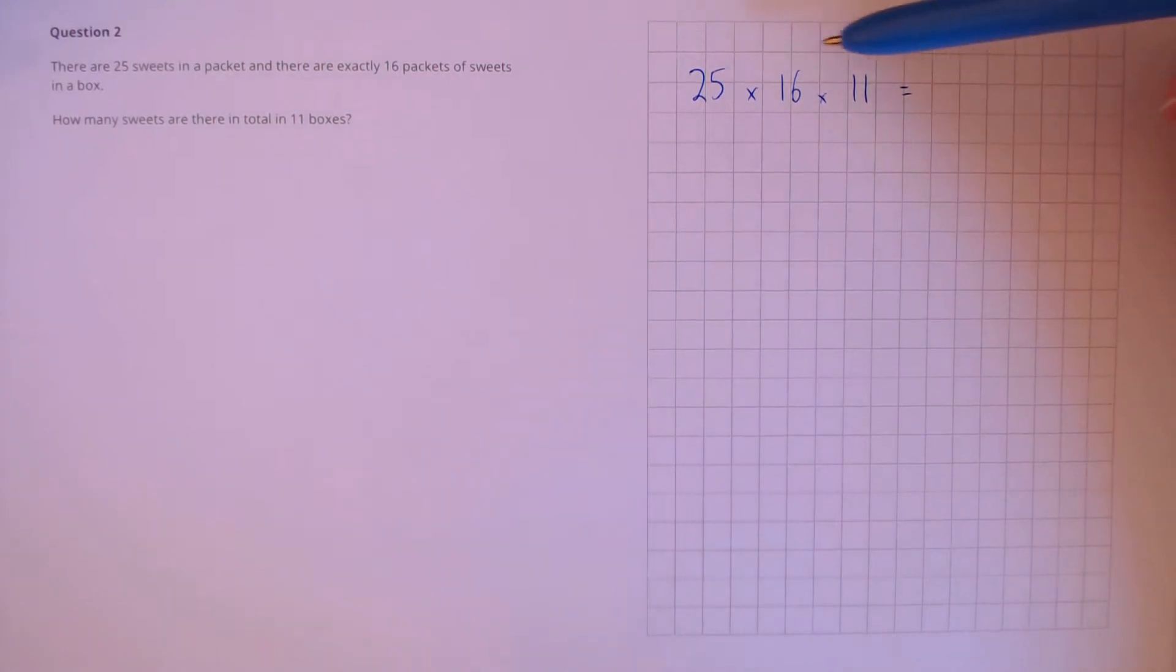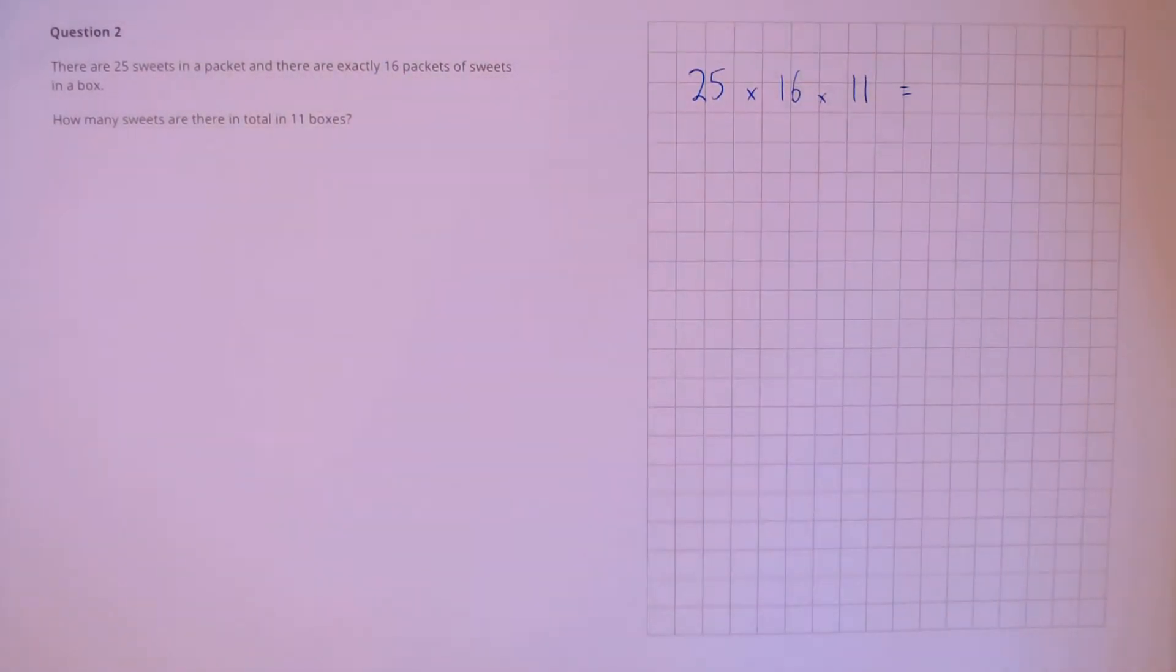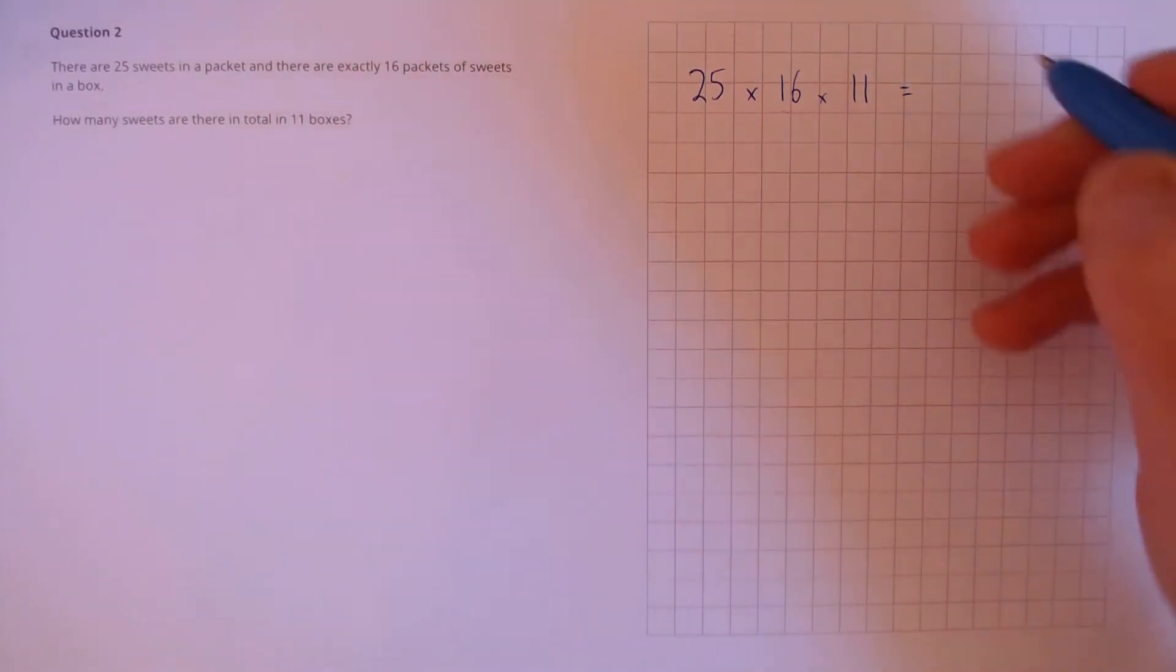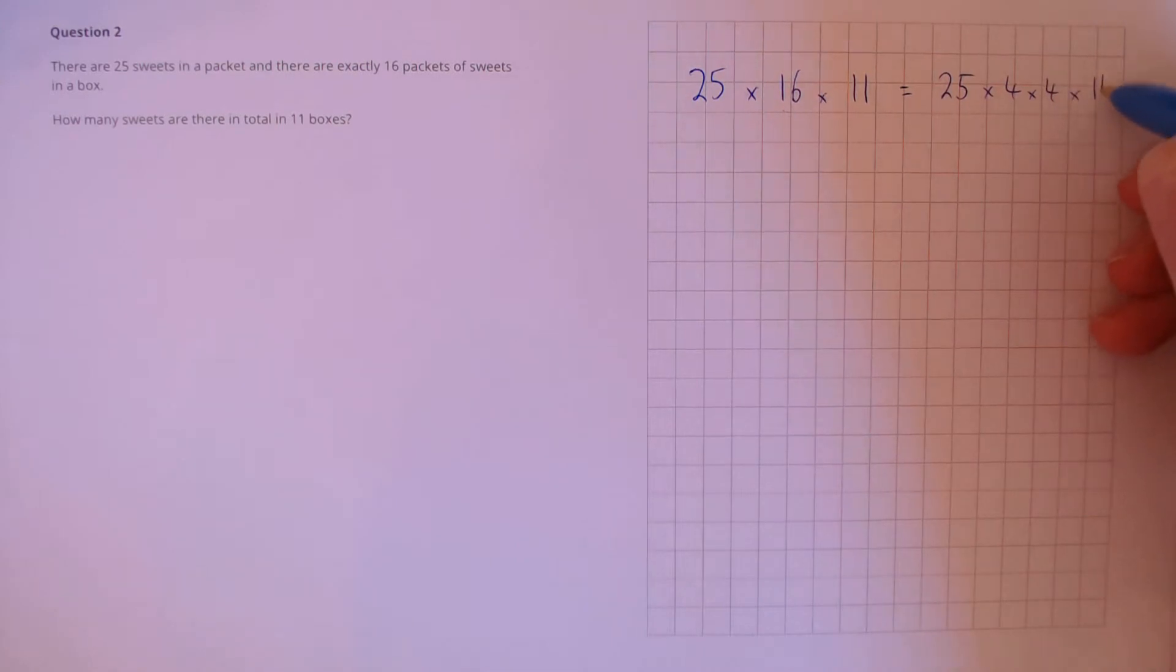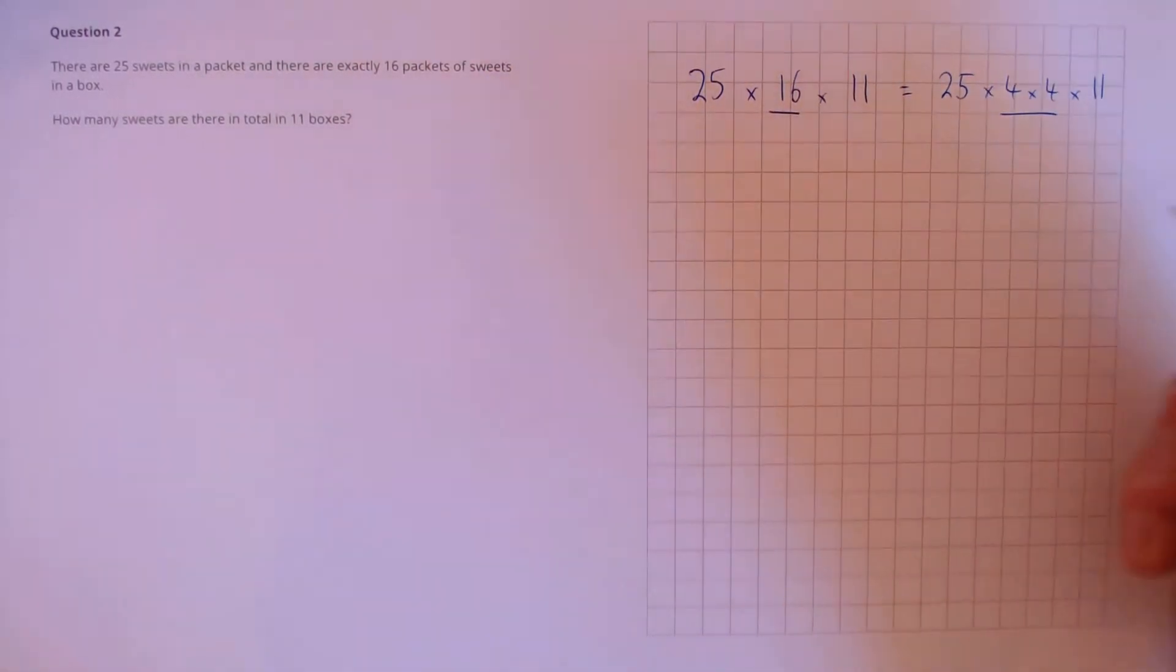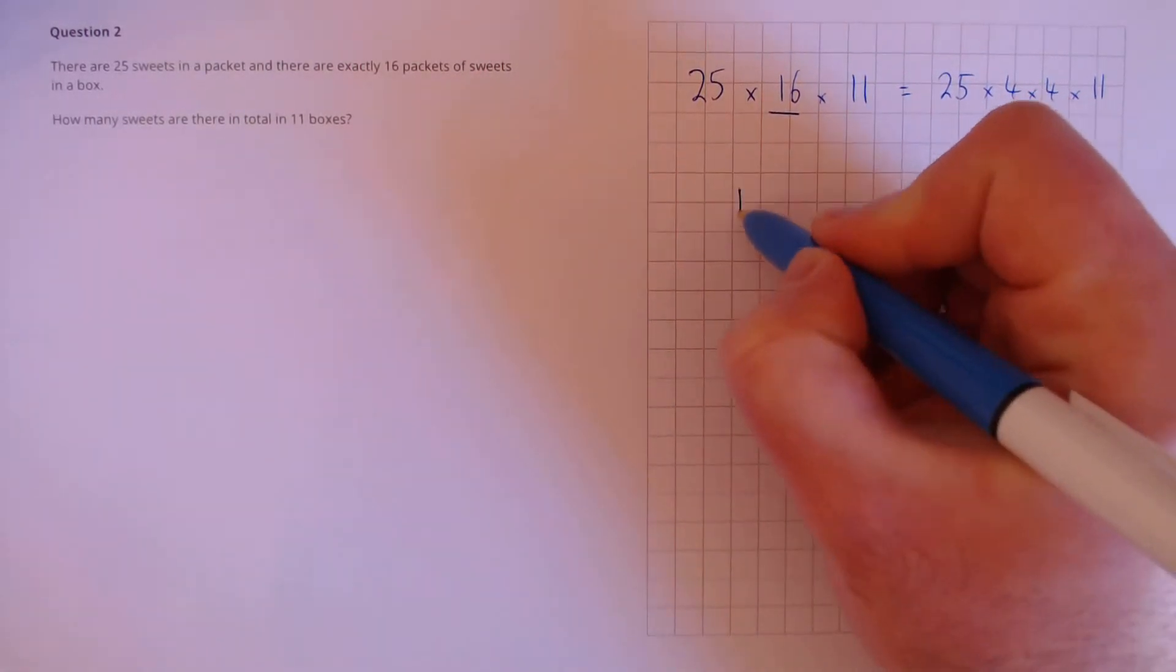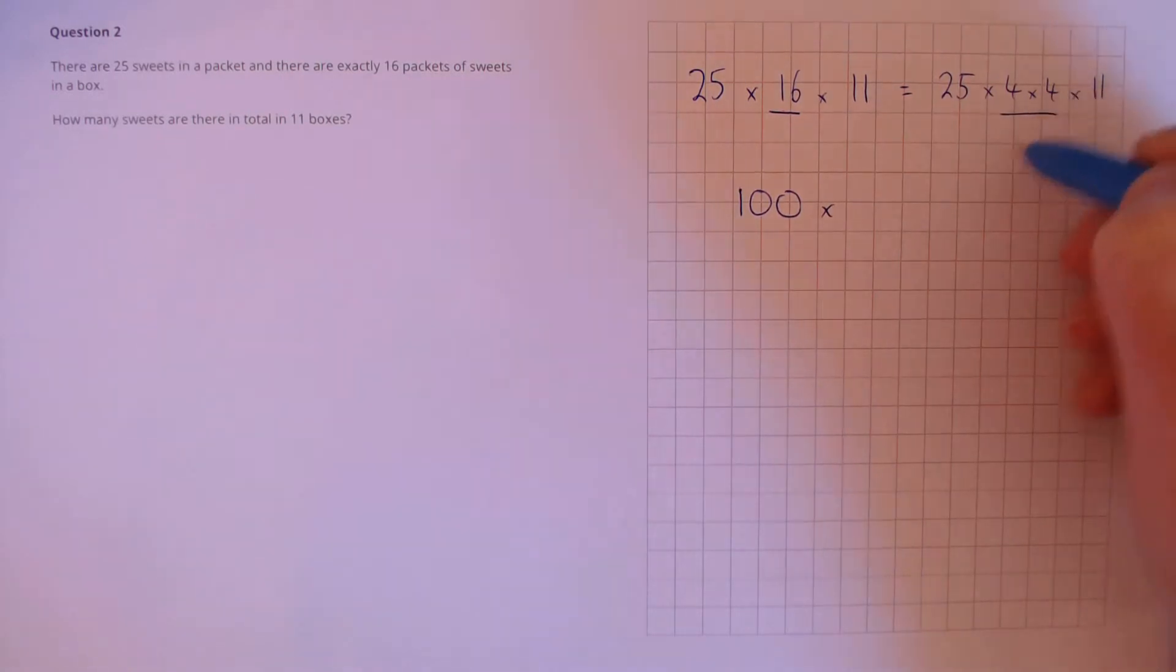This is quite complicated to do if we use our standard methods. However, we can take a shortcut. 25 multiplied by 4 is 100. So we see that here, 16 can be split up into 4 times 4. 25 times 4 times 4 times 11. Now let's do our multiplication in two parts. 25 times 4 is 100, and 4 times 11 is 44.